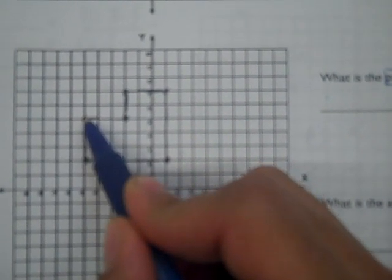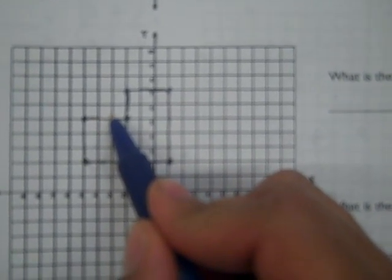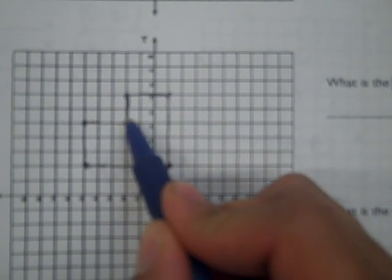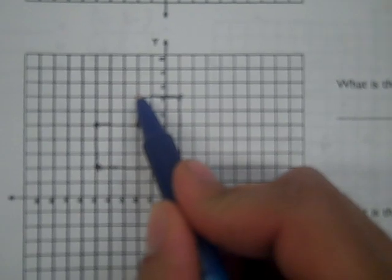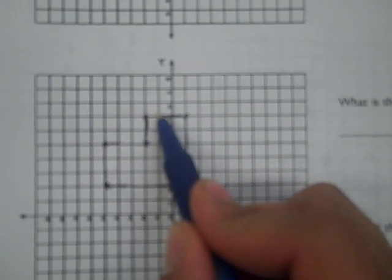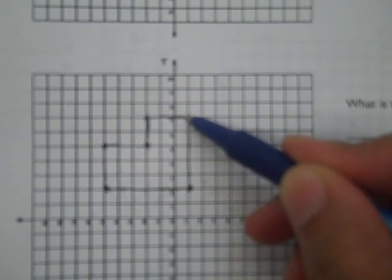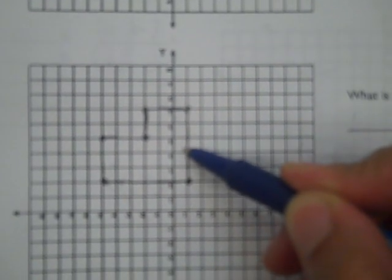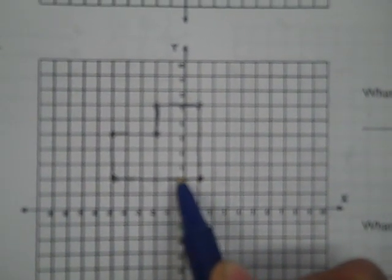So this is 0, 1, 2, 3, I'm going to go up now, 4, 5. I'm going to go to the right, 6, 7, 8. I'm going to go down now, 9, 10, 11, 12, 13. I'm going to go to the left, 14, 15, 16, 17, 18, 19. I'm going to go up now, 20, 21, 22.